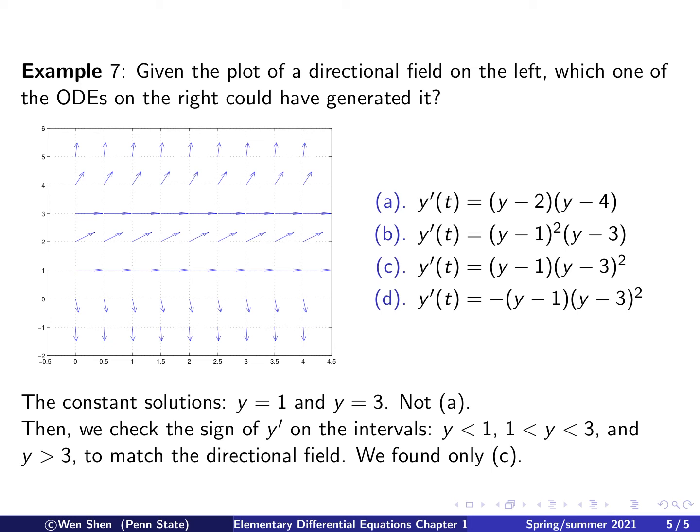And then let's consider the interval between 1 and 3. It has to be positive derivative. And let's look at (b). And this term is positive. If y is between 1 and 3, this term is negative. And the whole thing will be negative. And therefore, (b) is no good. Then we are left with (c). And we can easily verify that for (c), it will have negative sign for y less than 1, and positive sign between 1 and 3, and positive sign for y bigger than 3.